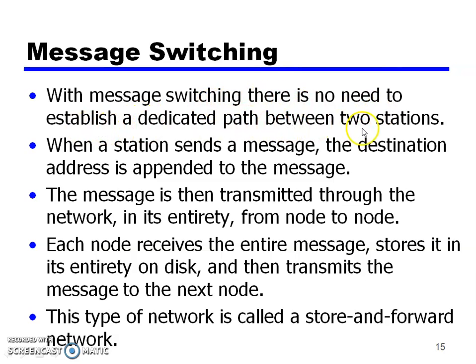With message switching, there is no need to establish a dedicated path between stations. If you want to send a message to a user or a friend, you can send a communication or message directly to that user. When a station sends a message, a destination address is appended to the message. The message is then transmitted through the network in its entirety from node to node.